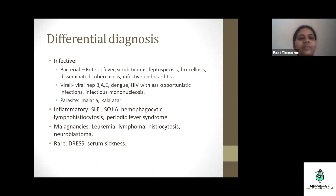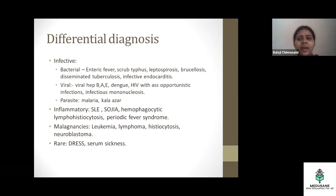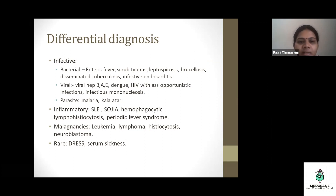For infections, we categorize as bacterial, viral, and parasitic. Bacterial causes include enteric fever, scrub typhus, leptospirosis, brucellosis, disseminated tuberculosis, and infective endocarditis. For viral causes: viral hepatitis A, B, E, dengue, HIV with associated opportunistic infections, and infectious mononucleosis. For parasites, it is mostly malaria, and in northern states of India, kala-azar — kala-azar is not seen in southern states.